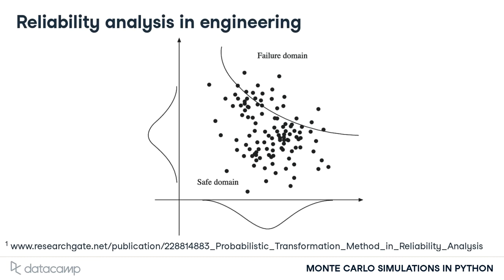In engineering, the mechanical modeling of physical systems is often complicated by the presence of uncertainties. To assess reliability, Monte Carlo simulations are used to estimate probabilities of failure and to define domains of safety in failure.